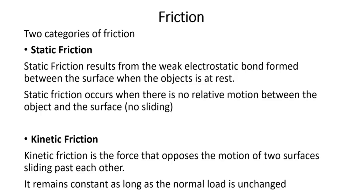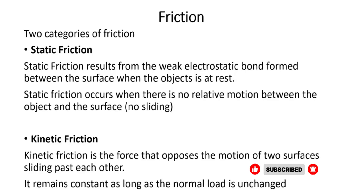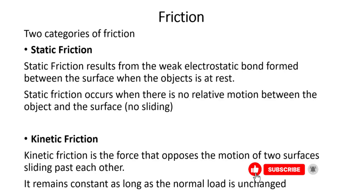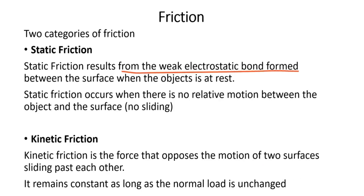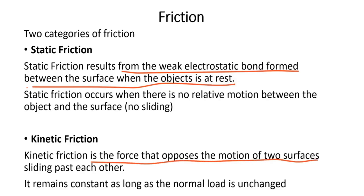Now we have two types of friction: static friction and kinetic friction. Static friction is a result of the weak electrostatic bond formed between surfaces when the object rests. Kinetic friction is the force that opposes the motion of two surfaces sliding past each other.